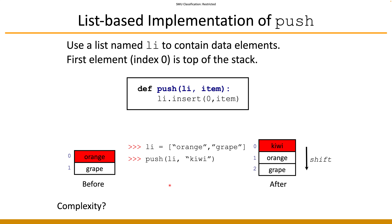Analyzing the complexity of push: if we have two existing elements and insert a new one at index zero, we must shift the existing two elements to positions one and two, then place the new element 'kiwi' at index zero. The amount of effort required to insert the element increases with the number of existing elements. Therefore, the complexity of push will be O(n) — linear in the number of elements; the more elements you have, the more time-consuming the operation becomes.